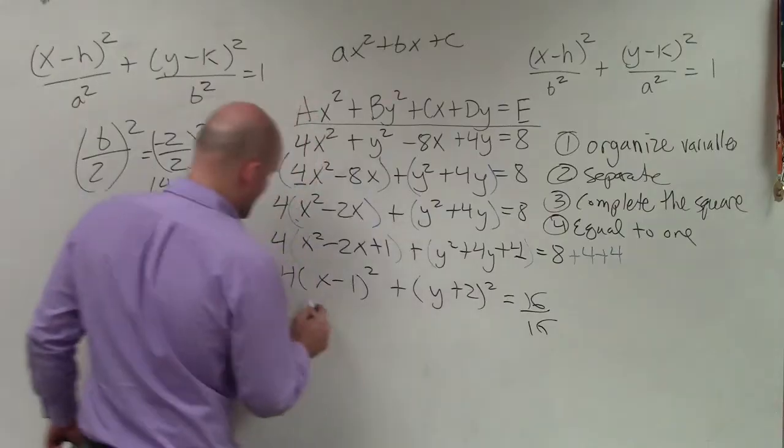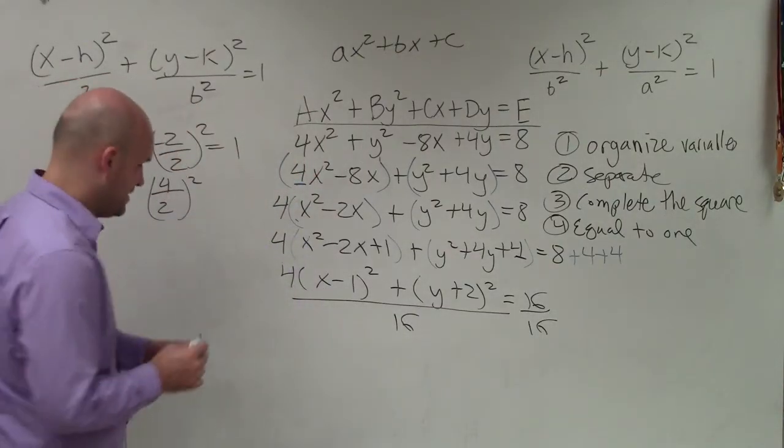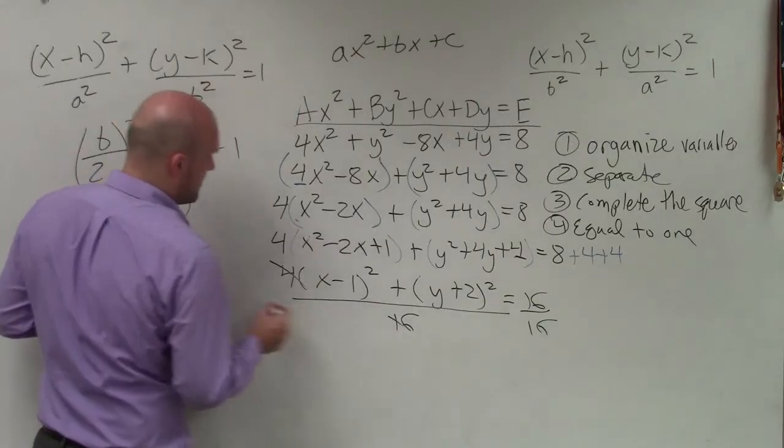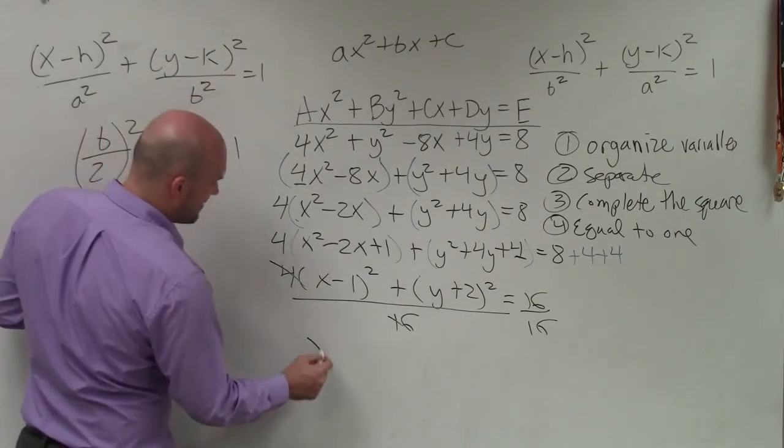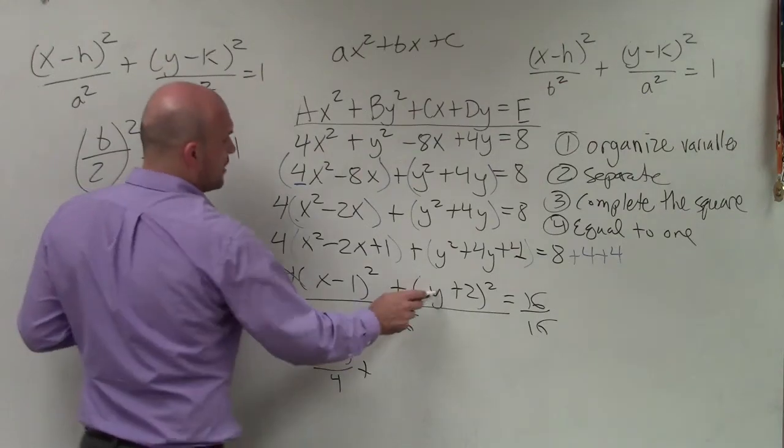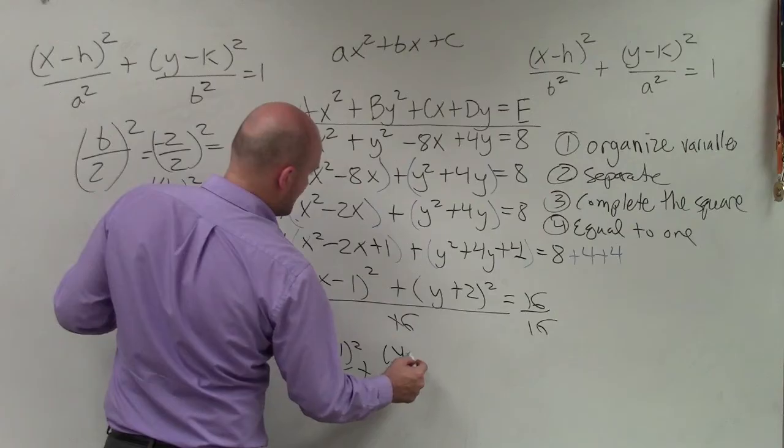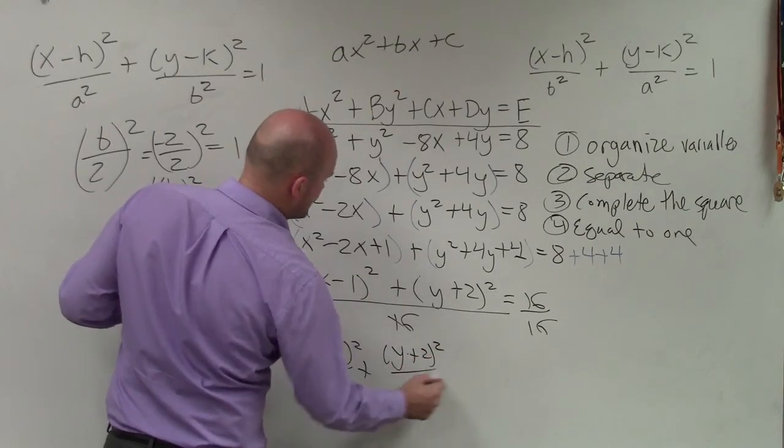So to do that, I need to divide by 16. And I'm going to divide both of these terms by 16. Obviously, you can see that here, that divides into 4. So I have (x - 1)² over 4 plus (y + 2)² divided by 16.